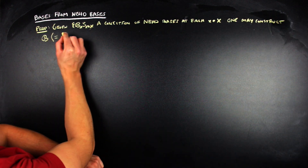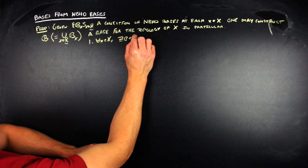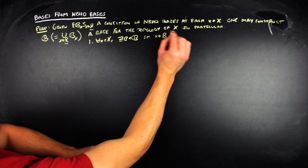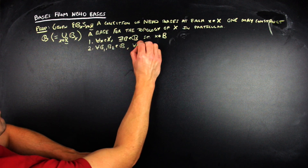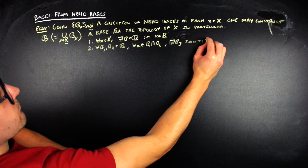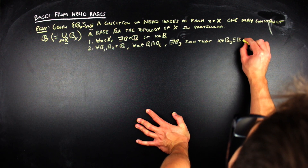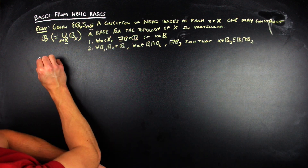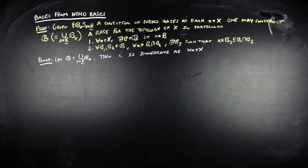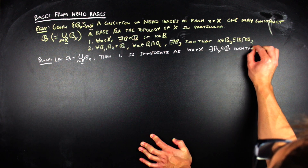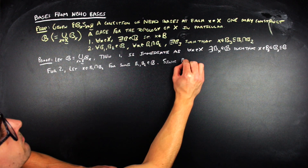A basis for a topology is a collection of open sets such that for each element of the space there is a basic open set containing it, and should two basic open sets have a non-empty intersection, for each point in that intersection there is a third basic open set which is a subset of the intersection of the original two. The first property is immediate, just by definition of the collection formed by taking unions over a neighborhood base for each point. The second property is a little bit more involved, but still quick.